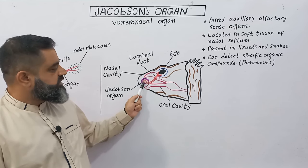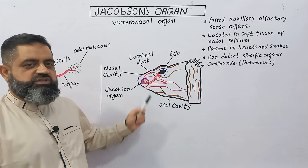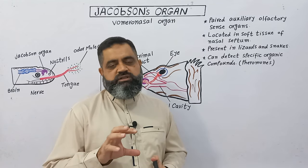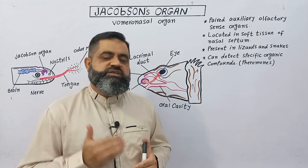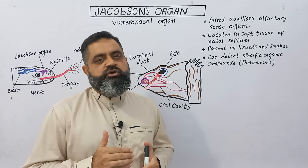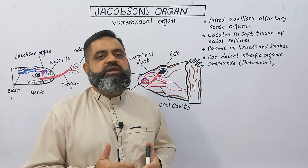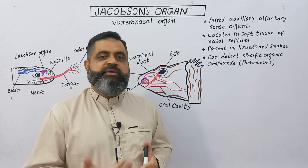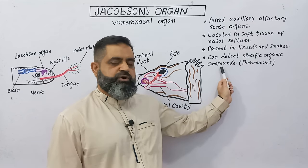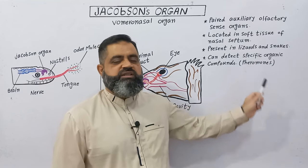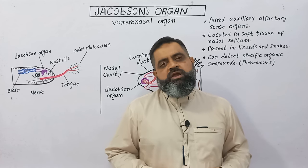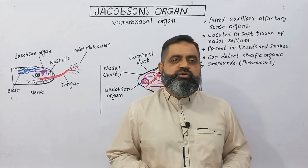The Jacobson organ also has a connection with the oral cavity. In this way these animals can smell certain chemicals present in the air, which may be coming from a prey, a predator, a human being, or a reproductive mate. These Jacobson organs can detect specific organic compounds, sometimes pheromones, allowing the animals to perform offense and defense. I hope it makes sense — that's all for today. See you in the next lecture.